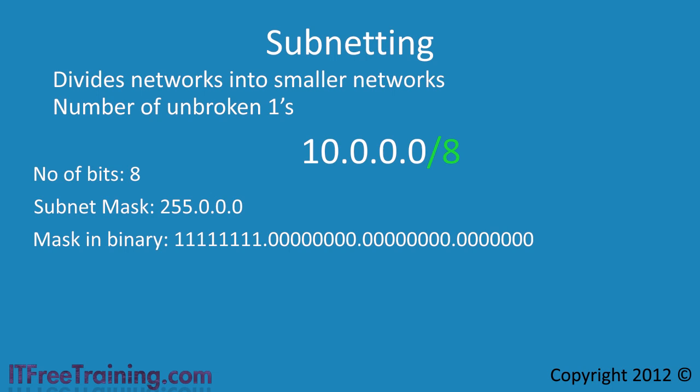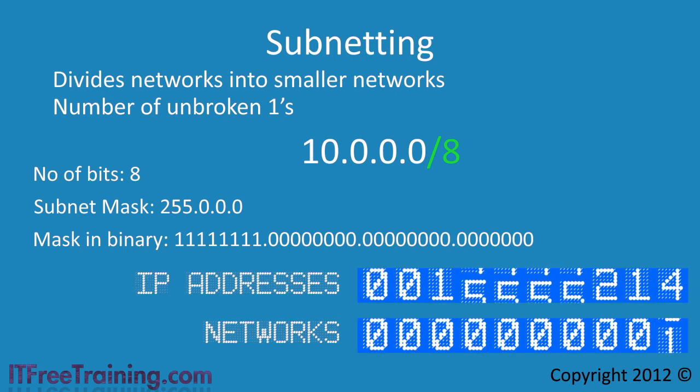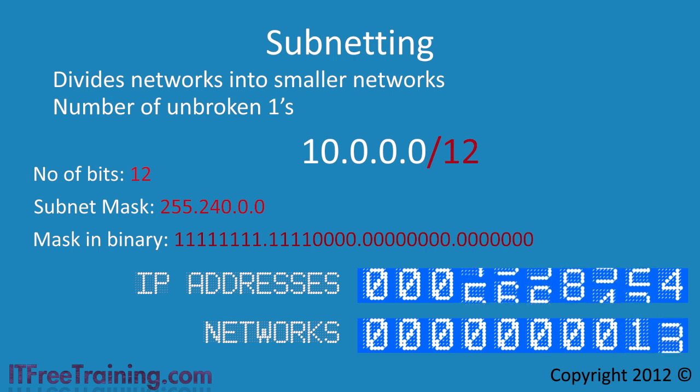If you take the private network 10.0.0.0 with a subnet mask of 8 bits, this gives you over 16 million hosts. Not even the largest network has this many hosts on one network segment, so more than likely you will want to divide this network up into smaller parts. If you increase the number of bits used in the subnet mask, the number of networks goes up and the number of hosts per network goes down. When deciding on which subnet mask to use, it is simply a case of deciding how many networks and how many hosts you want per network.